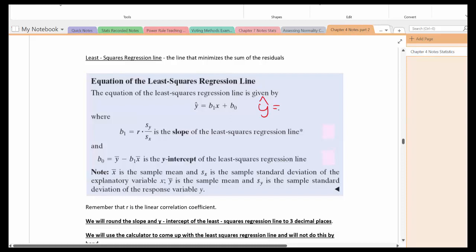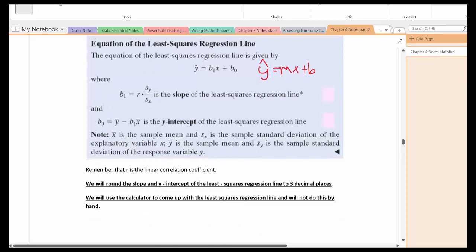it looks a lot like this, y hat is equal to mx plus b. But they change what the slope is. The slope is b1 and the y-intercept is b0. They show you how you can get the slope and the y-intercept without technology. But notice in this particular case, we will be using the graphing calculator to come up with the least squares regression line. We will never be doing this by hand. And we'll round the slope and the y-intercept to three decimal places.